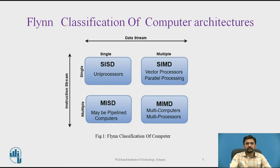With respect to data stream and instruction stream: machines based on SISD are considered uniprocessors. SIMD machines are vector processors or parallel processing machines. MISD — Multiple Instruction Single Data — may include pipeline computers. MIMD refers to multi-computers and multi-processing machines.